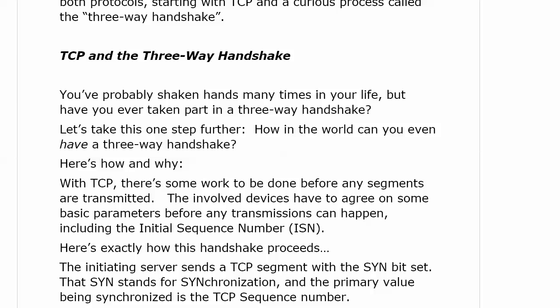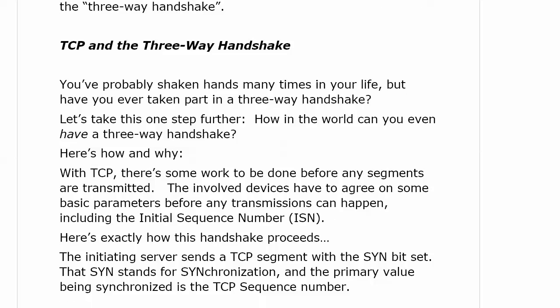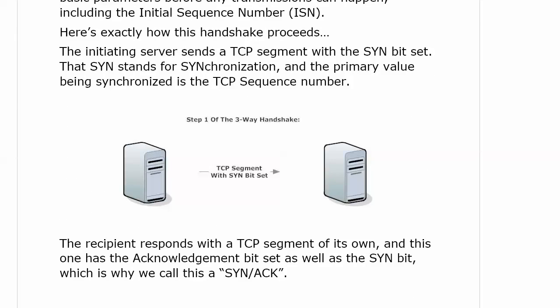The involved devices have to agree on some basic parameters before any transmissions can happen. There has to be an agreement on some basic values, including what we call the initial sequence number, or ISN. Here's how the handshake proceeds: the initiating server is going to send a TCP segment with the SYN bit set — SYN is short for synchronization — and the primary value being synchronized is the TCP sequence number.